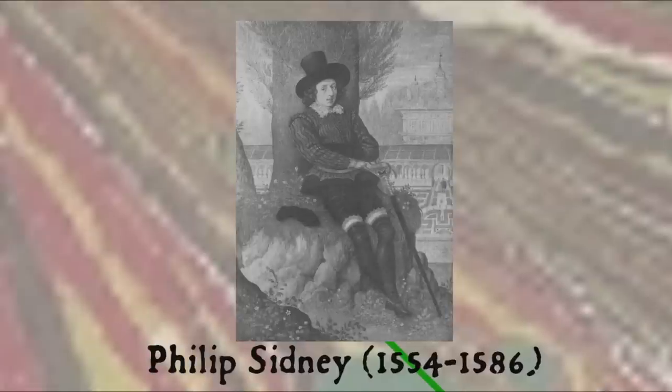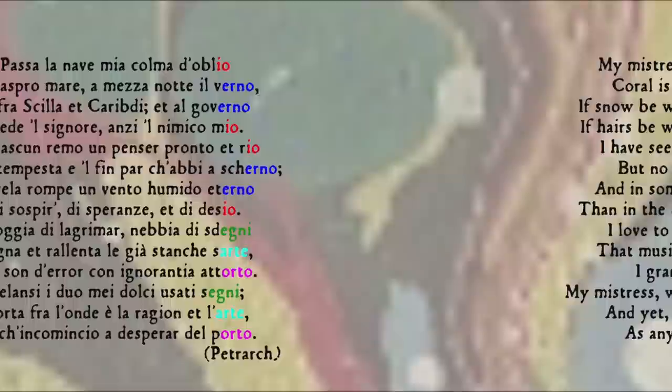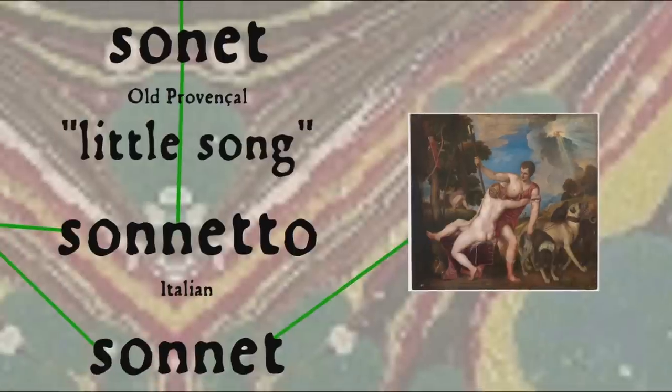As you can imagine, such a strict and complex rhyme scheme required much skill to pull off. The form was eventually transported to England and taken up by many English poets, including Sir Philip Sidney, Sir Edmund Spenser, and William Shakespeare. The English sonnet took on the structure of three quatrains and a final rhyming couplet, with the rhyme scheme ABABCDCDEFEFGG.